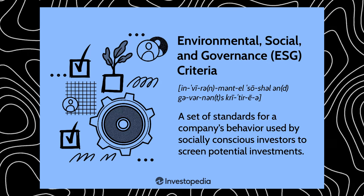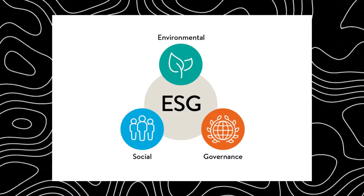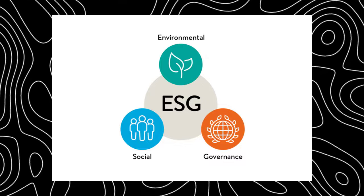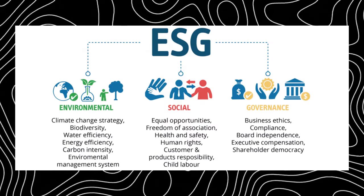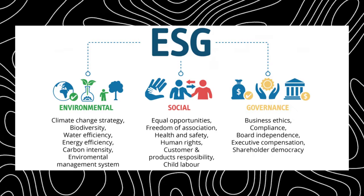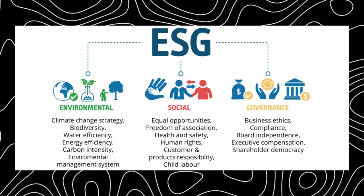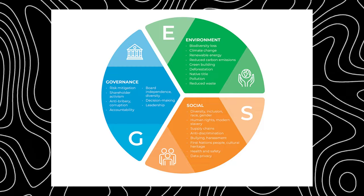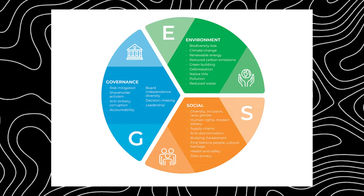ESG stands for Environmental, Social, and Governance — a set of considerations used during financial investing. First developed by the United Nations, large investment groups like BlackRock use it as a social vetting process before deploying capital. The three main factors are: how a company safeguards the environment, how it manages relationships with employees and suppliers, and the overall practices of good governance within an organization. In recent years, ESG has become a critical standard for evaluating companies before investment, though many critics believe it gives firms like BlackRock too much oversight and direction over companies.